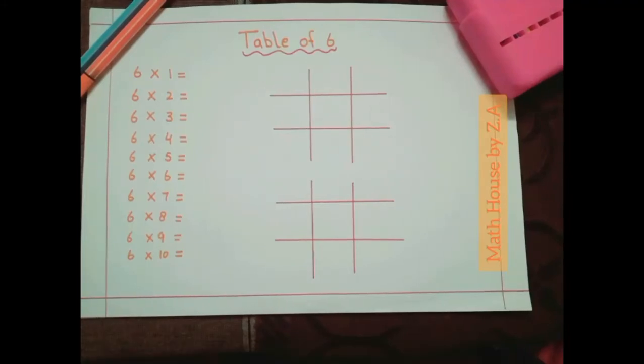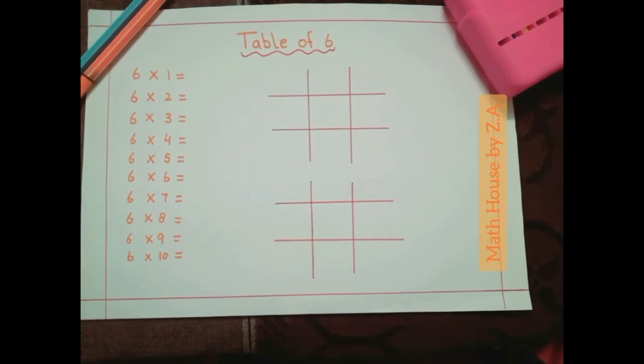Now I am going to show you how you can easily write the table of 6. To write the table of 6 you need to draw 2 grids of 3 by 3.